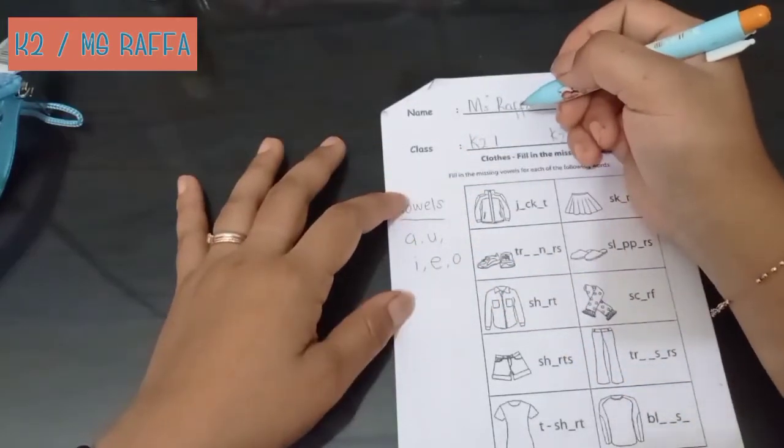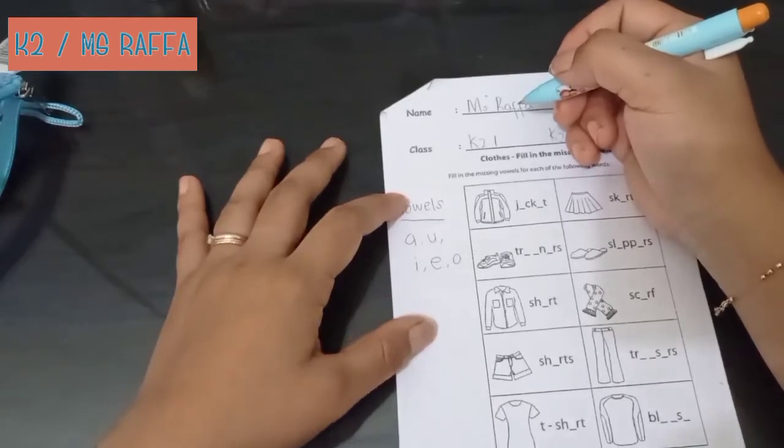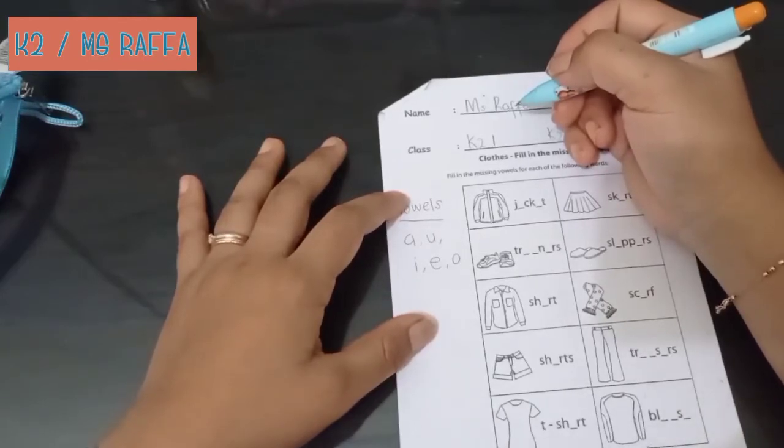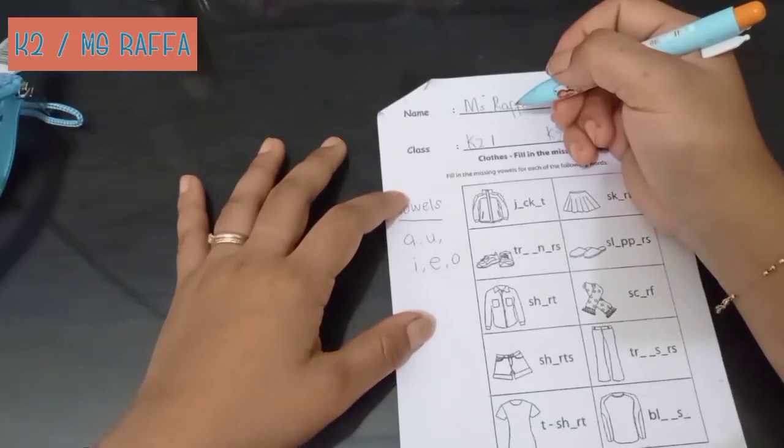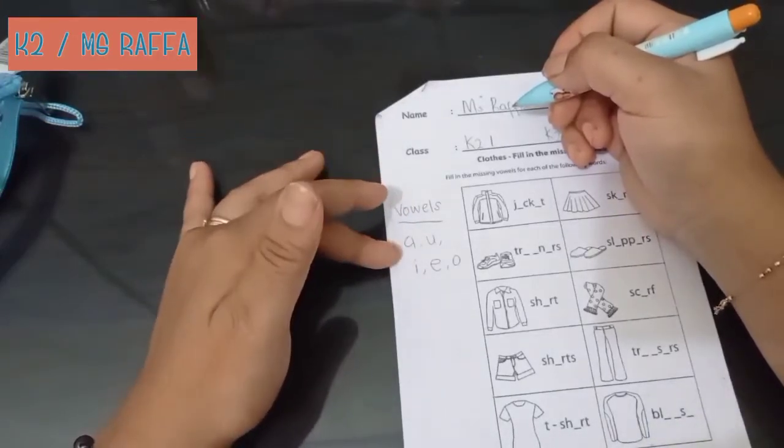Vowels. A, U, I, E, O. That's vowels. B, C, D, F, G, H, K, L, M, N, P, Q, R, S, T, V, W, X, Y, Z. Sorry. It's consonant. They are consonants.